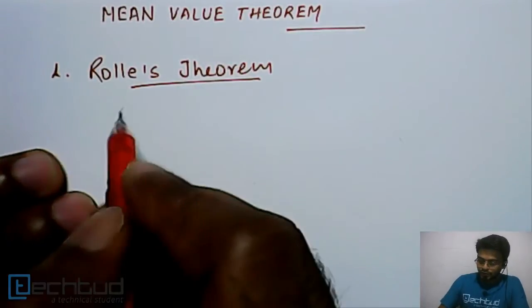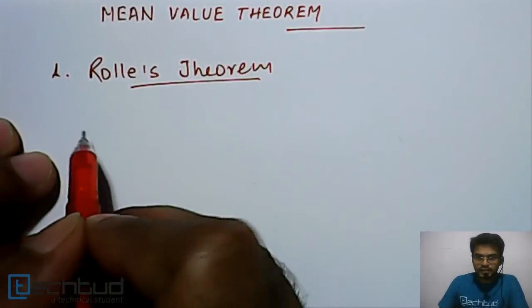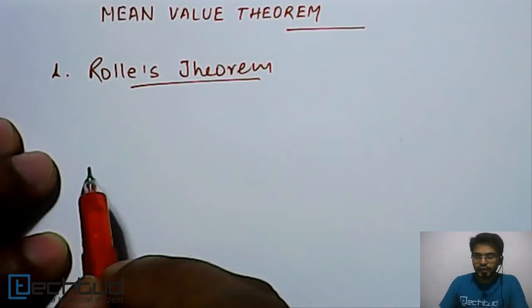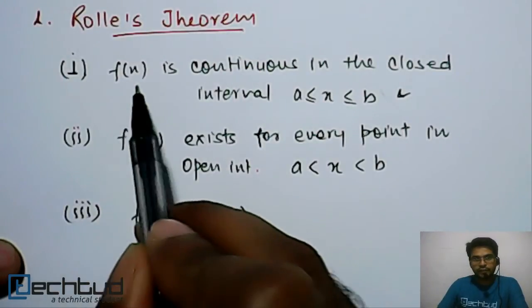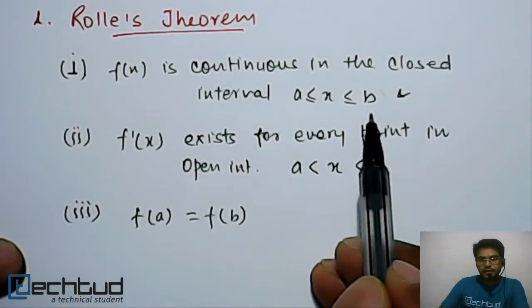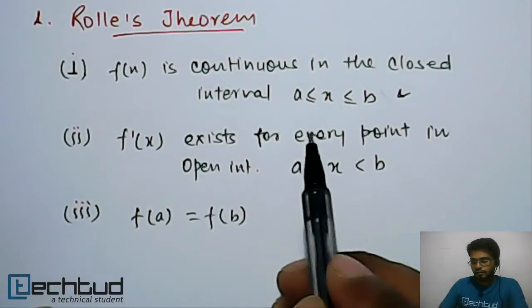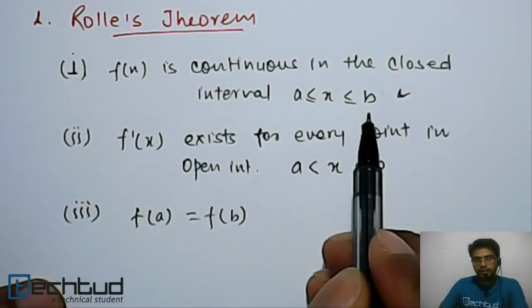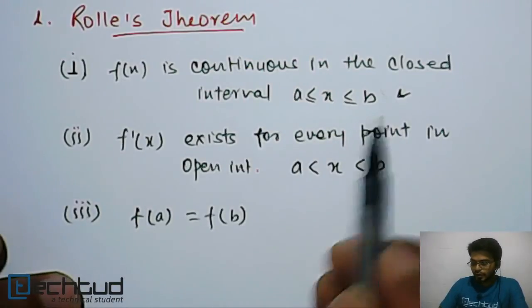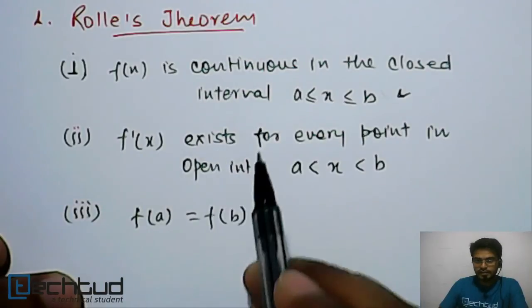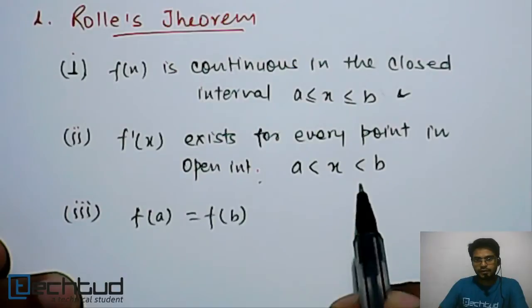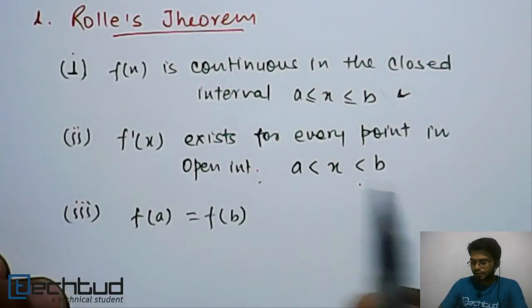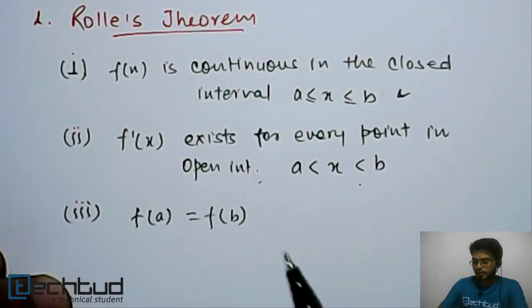Rolle's Theorem has the following conditions: first, f(x) is continuous within the closed interval [a, b]; second, f'(x) exists for every point in the open interval (a, b); and third, f(a) is equal to f(b).